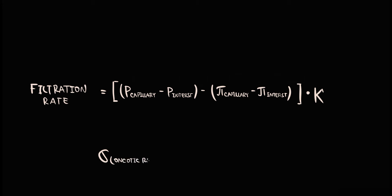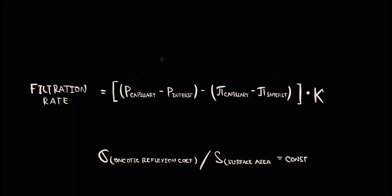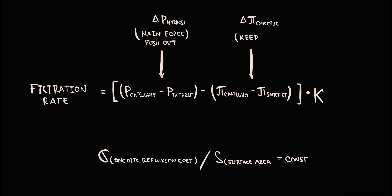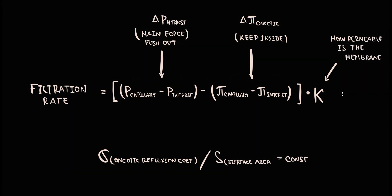This is a simplified version of the equation where we suppose that oncotic reflection coefficient and surface area are constant. Hydrostatic pressure difference is the main driving force that pushes fluid out of the capillary. Oncotic pressure difference is the force that draws fluid inside the capillary. Hydraulic conductivity describes how permeable the membrane is. This is a general concept of fluid exchange that can be applied to every tissue.